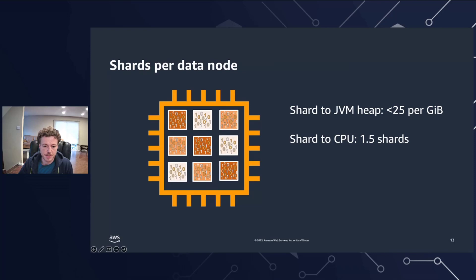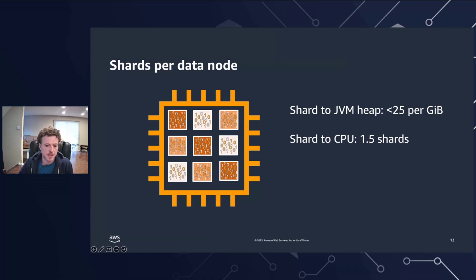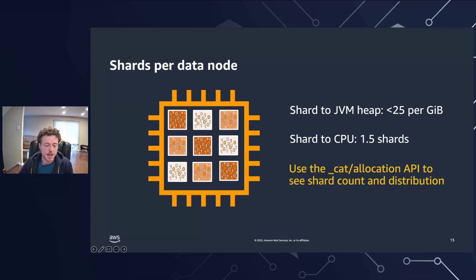An active shard is one that receives search and/or indexing traffic. If your instance type has 8 vCPUs, set your data node count such that each node has no more than 6 shards. Note that this is an approximation and you should be sure to test your workload and scale your cluster accordingly. You can always use the cat allocation API to get a view of the number of shards and total shard storage across your data nodes.